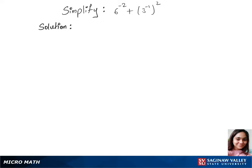Let's simplify this question. We'll be using some rules to do that. So let's write our first step: 6^(-2) plus, we are multiplying the powers for this base 3.